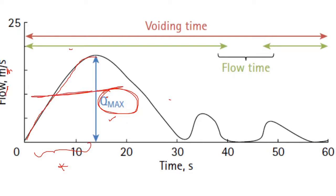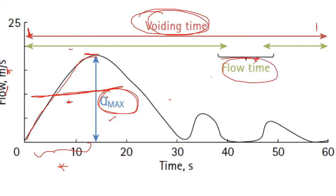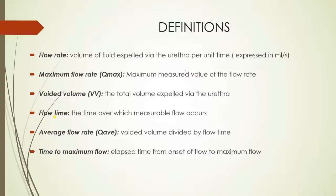The average flow is like the midpoint of the graph. The entire duration from start until the patient completes micturition is the voiding time, whereas flow time is the duration during which actual urinary flow occurs. There is a difference between these two.